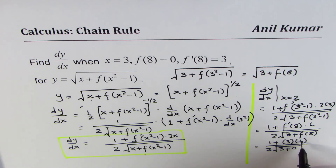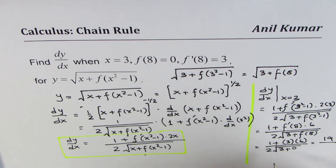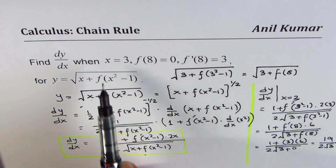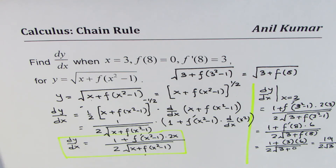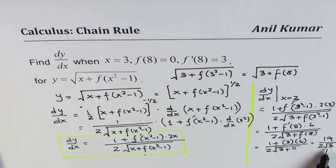3 times 6 is 18, and 18 plus 1 is 19, so we get 19 over 2√3. That is the derivative of the given function at x equals 3. Some of you can rationalize this by multiplying and dividing by √3 to remove the square root from the denominator. I'll leave that part for you to do.